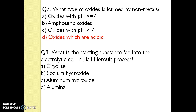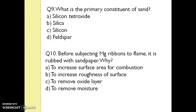Q8. What is the starting substance fed into the electrolytic cell in the Hall-Heroult process? The answer is alumina. Q9. What is the primary constituent of sand? The answer is silica. Q10.